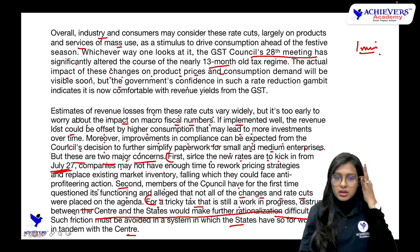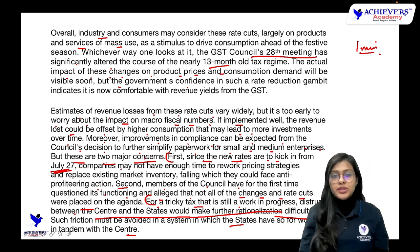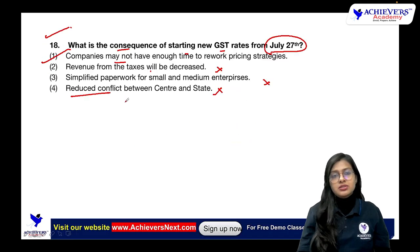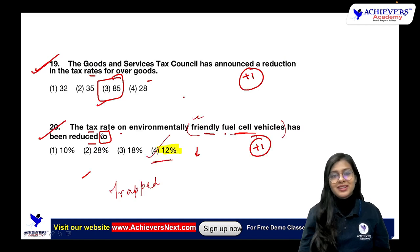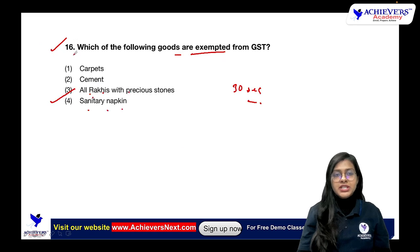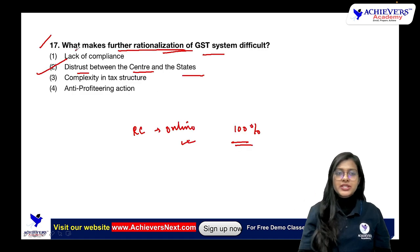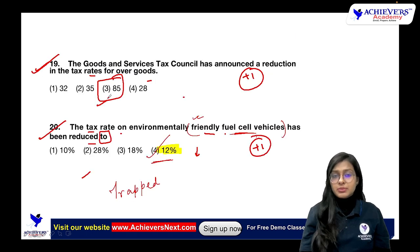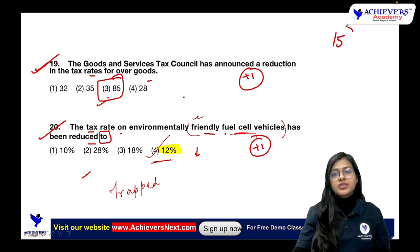Wherever you see the date July 27th, just read that line — companies may not have enough time to rework pricing strategies — so the answer is option number one. The answers for questions 16 to 20 are: Q16 option three, Q17 option two, Q18 option one, Q19 option three, Q20 option four. Tell me how much you got out of five — just calculate your marks.